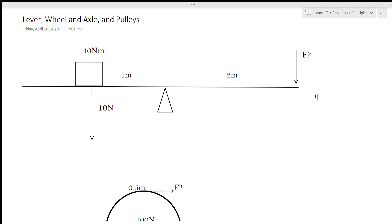Now that we know that the left side is exerting 10 newton meters of torque, we can figure out the force on the right. We know that 10 newton meters equals r cross f. Our r is 2 meters, so if we divide 10 newton meters by 2 meters, we get 5 newtons.